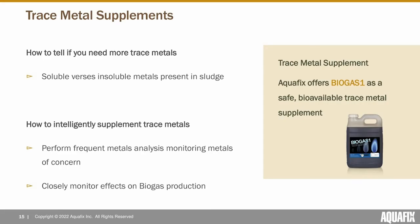How do you tell if you need a trace metal supplement? We look at soluble versus insoluble metals. Perform metal analysis and begin to supplement metals where you see low levels of soluble metals. Combined with that, once you begin applying metals you should see a pretty dramatic boost in methane production in a fairly short period of time if they're actually working. Closely monitoring biogas production after supplementing a metal shows if it's actually working — if you don't see a boost, you might want to discontinue adding that metal.